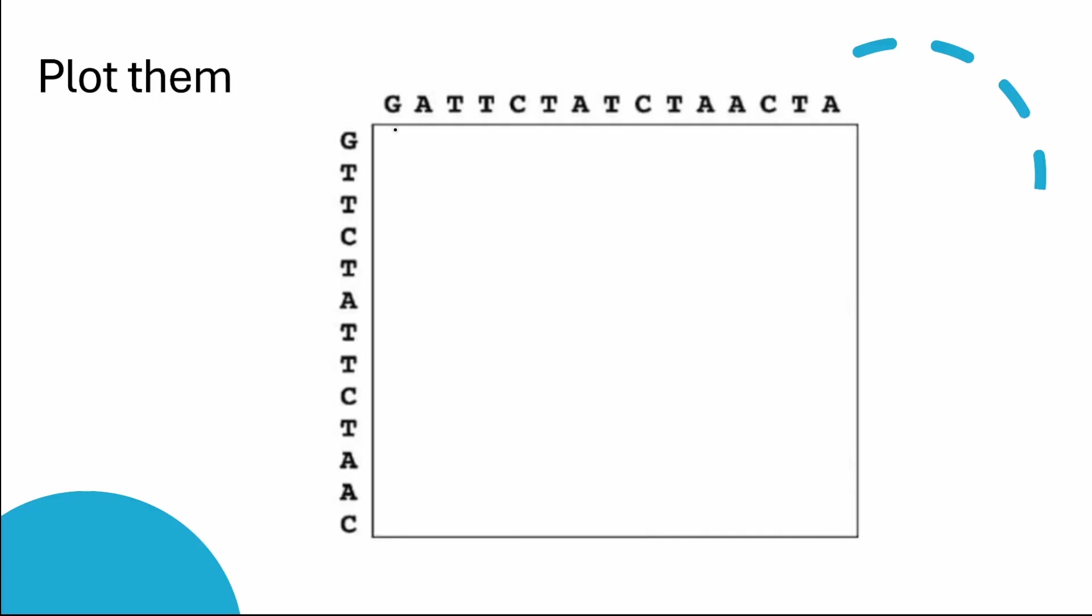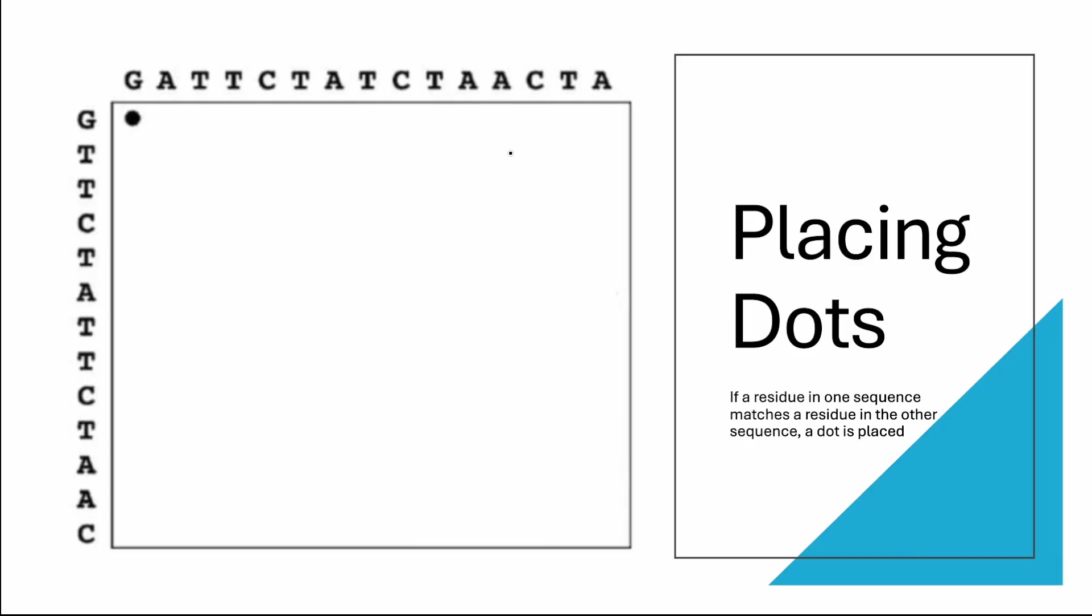As you can see right over here, G matches perfectly with G, so I will place a dot right over here. But when I move to the next part where it's written a T, I will not place any dot. In this way, we will continue placing dots in our matrix.